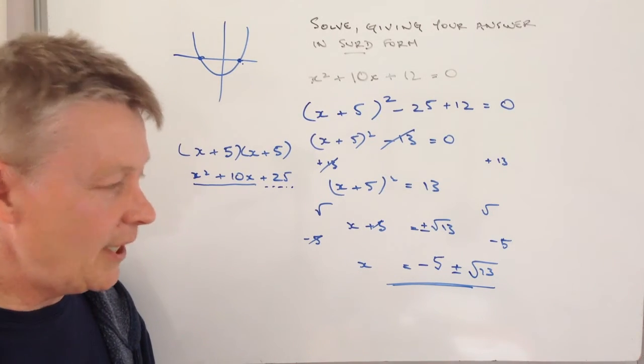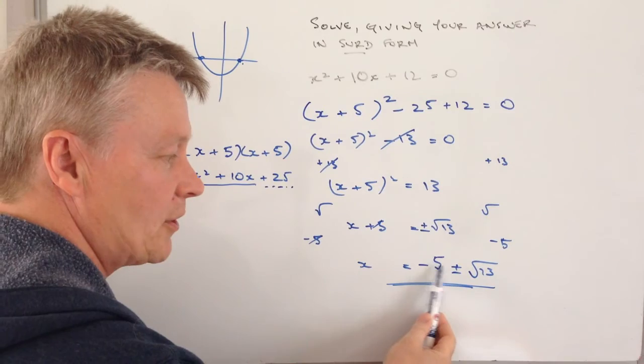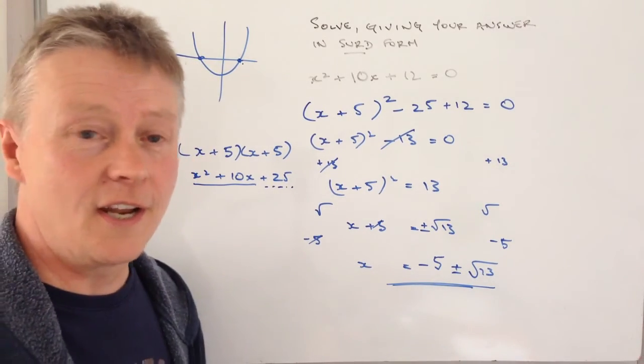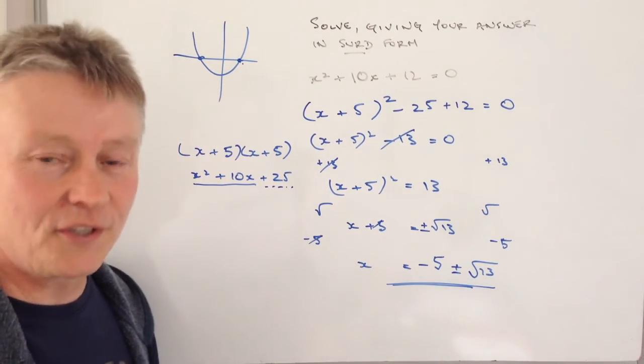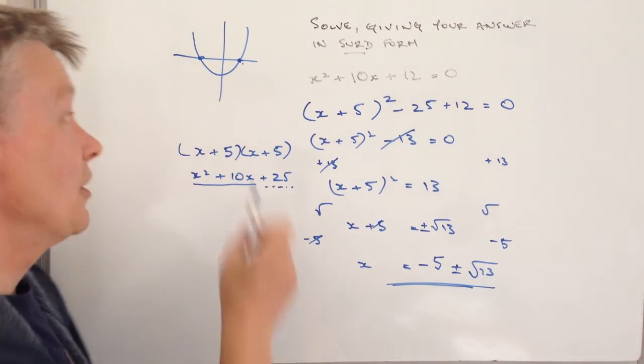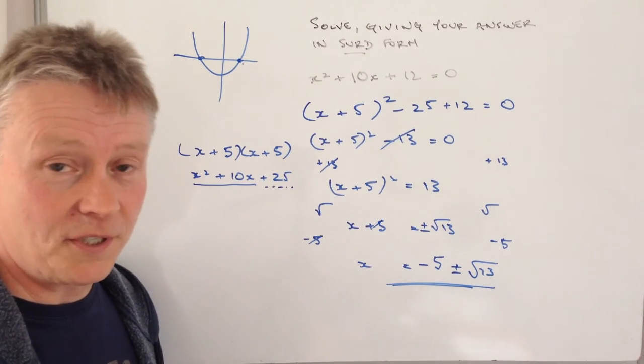It might be on the paper you get asked to separate the two, in which case you'll get minus 5 plus the square root of 13 and minus 5 minus the square root of 13. That'll be the two solutions for this particular value of x on this graph.